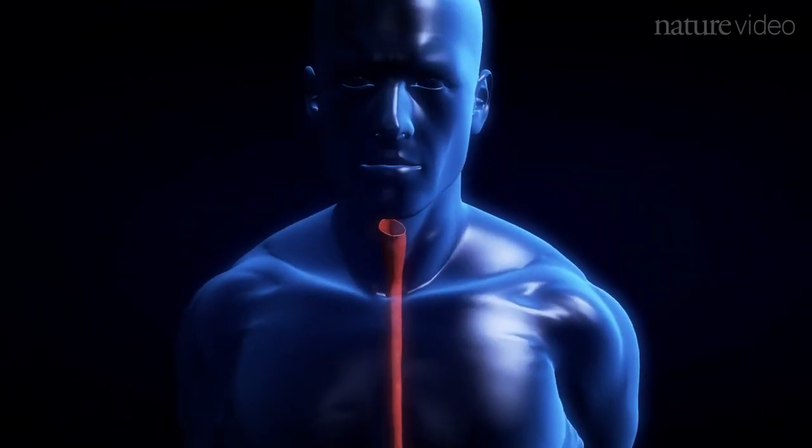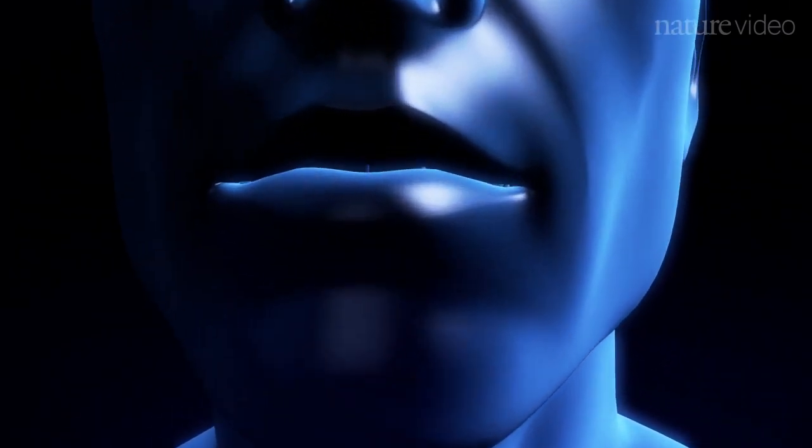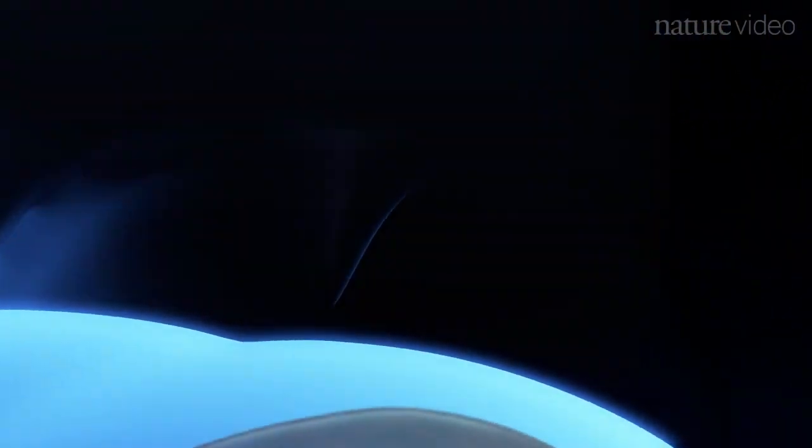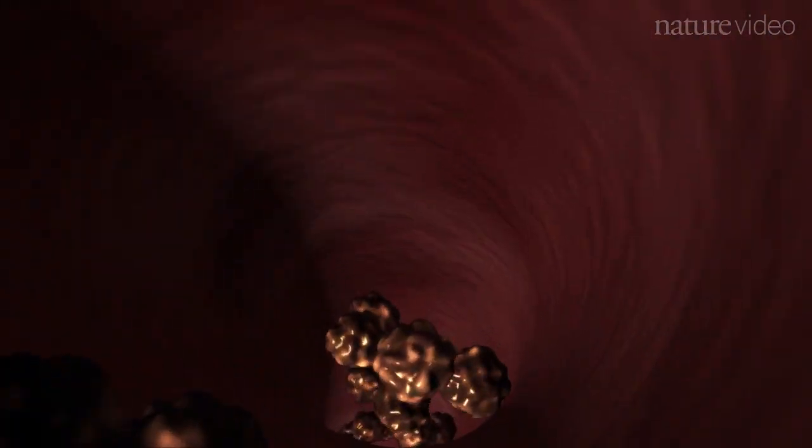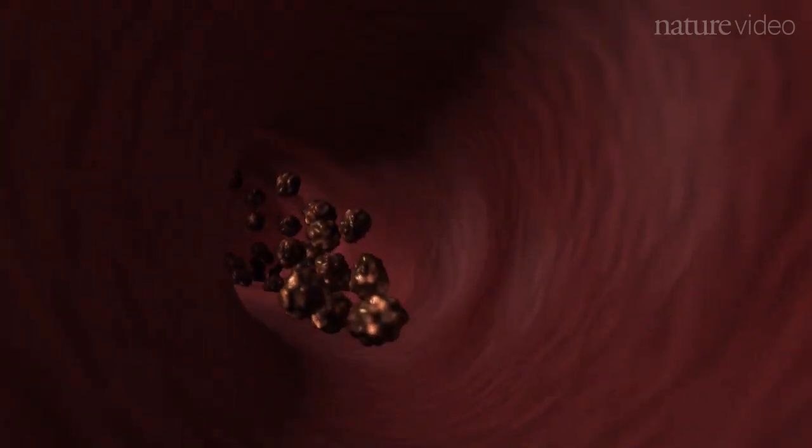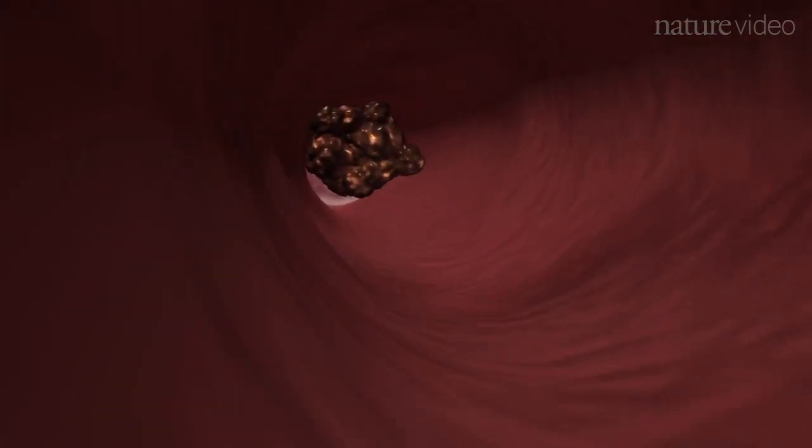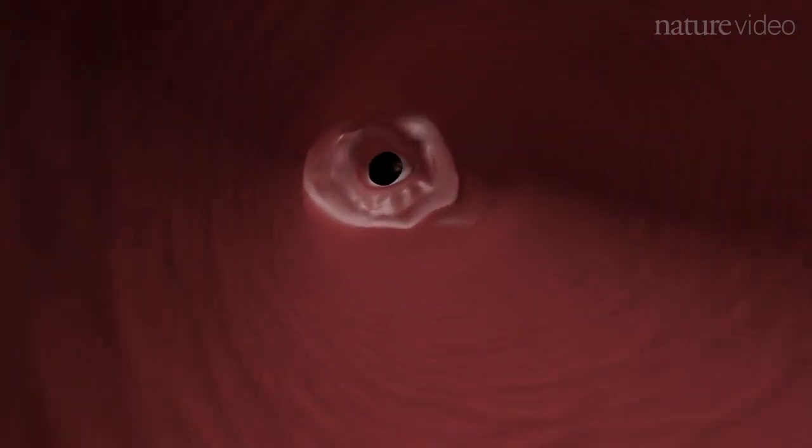The gut is often the body's first point of contact with microbes. Every mouthful of food is accompanied by a cargo of microorganisms that go on to encounter the mucosa, the innermost layer of the gut. Most microbes are destroyed by the harsh, acidic environment in the stomach, but a hardy few make it through to the intestine.